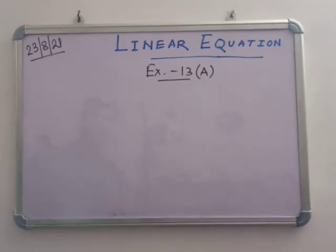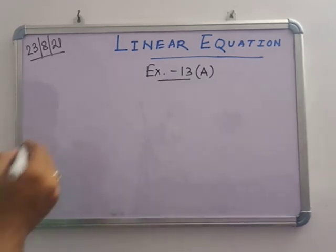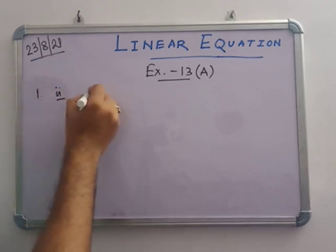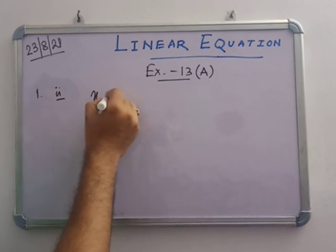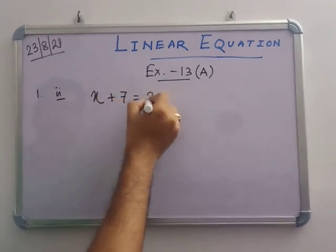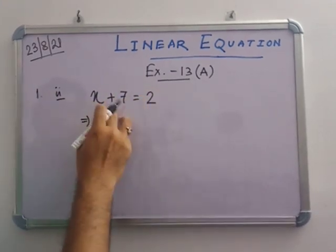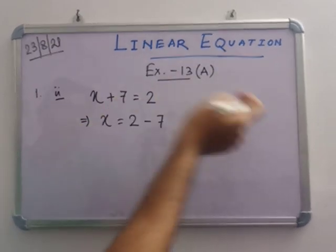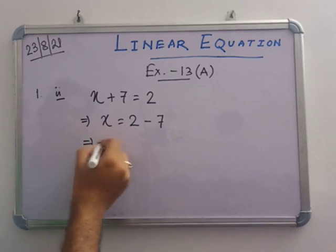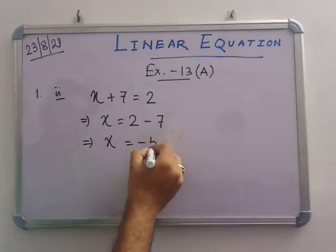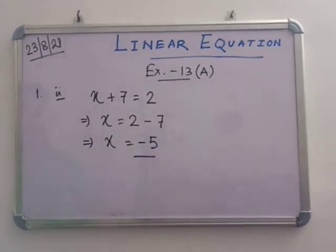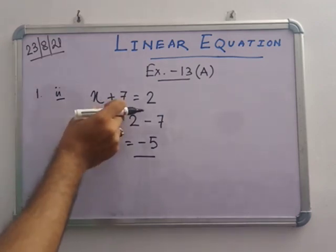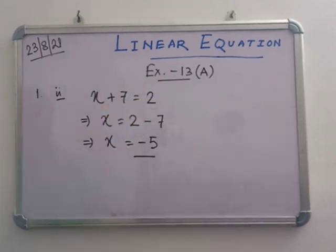Now we are going to start Exercise 13a. In 1a, problem 2: x plus 7 equals to 2. Change the sign when moving to the opposite side. So x equals to 2 minus 7, which gives x equals to minus 5. Verification: minus 5 plus 7 equals 2, which matches the right hand side. Proved.